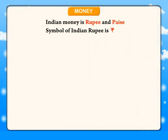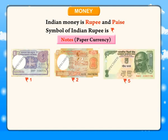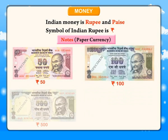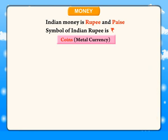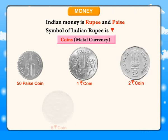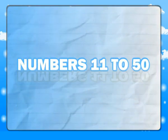Money. Indian money is rupee and paise. The symbol of Indian rupee is this. Notes — paper currency: 1, 2, 5, 10, 20, 50, 100, 500, 1000. Coins — metal currency: 50 paise coin, 1 rupee coin, 2 rupee coin, 5 rupee coin, and 10 rupee coin.